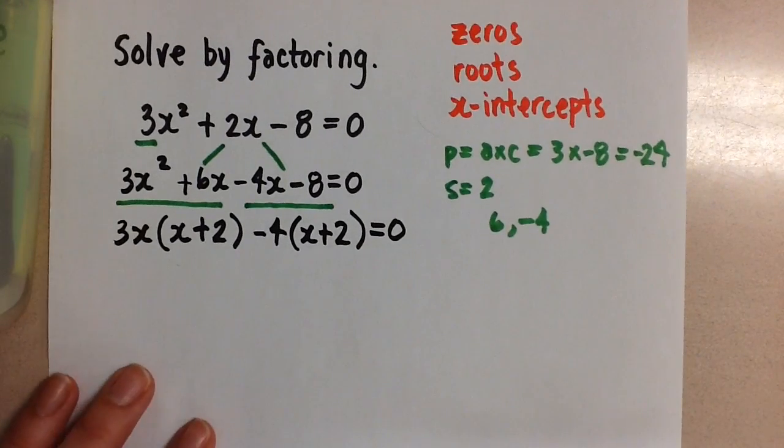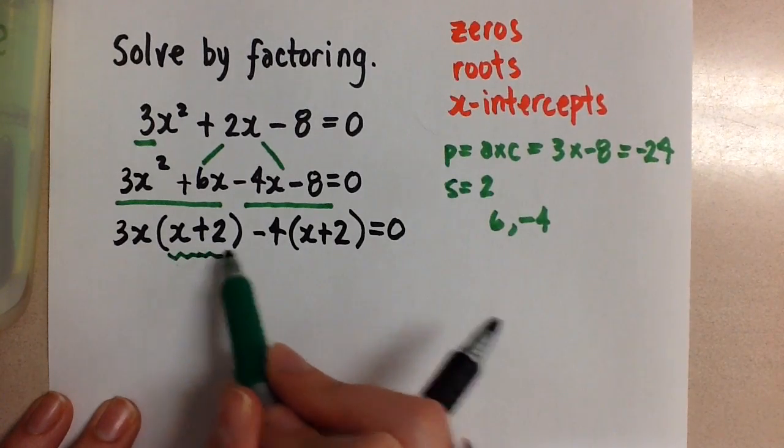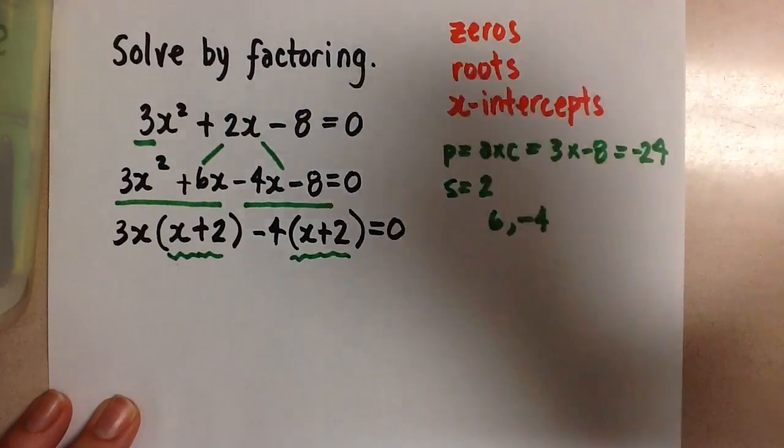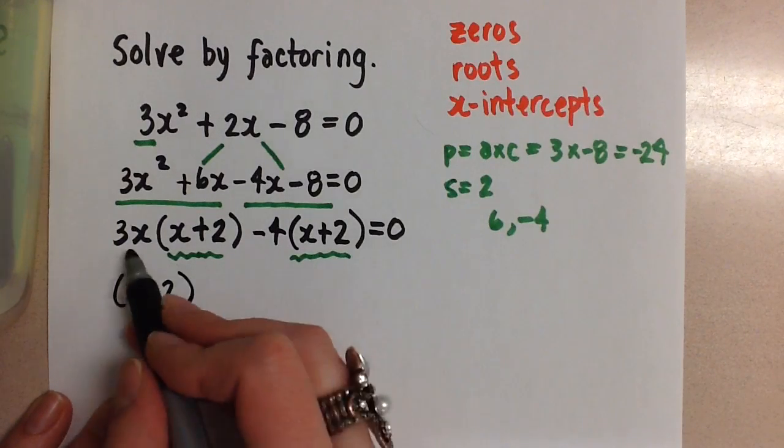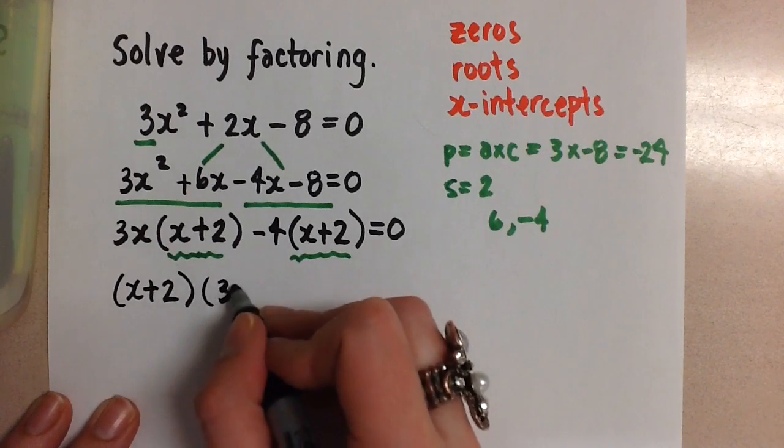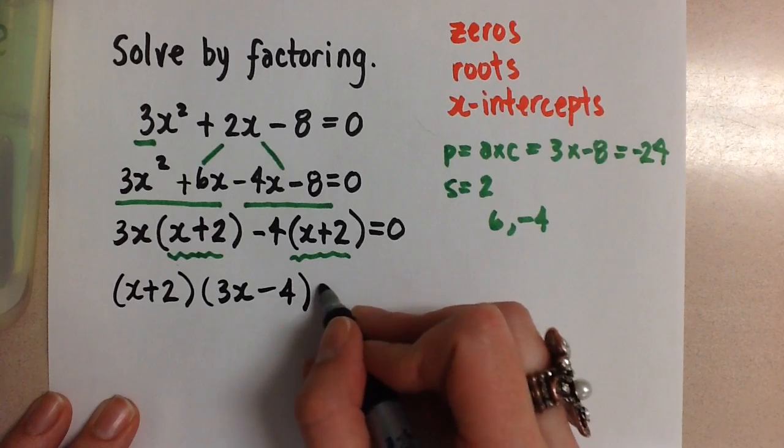Now, by doing that, we see that we've created a common factor of x + 2. So we're going to pull that out to the front. And when I do that, I'm left with 3x - 4 as my other factor.